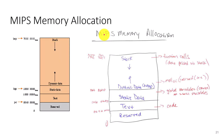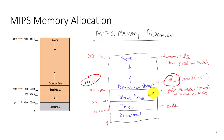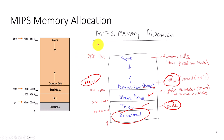Memory is allocated such that function calls are handled through the stack, dynamic allocation is handled through the heap via malloc or Java's new operator, variables are stored in the data area, and code is stored in the text area. There's also an area reserved for primary functions of the CPU.